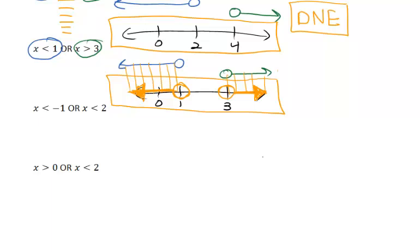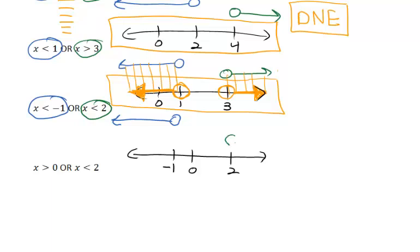Two more examples here. Let's look at x is less than negative 1 or x is less than 2. We've got negative 1 here, we'll put 2 up here. If x is less than negative 1, we go from negative 1 down. If x is less than 2, we go from 2 down.